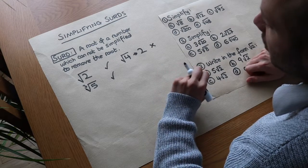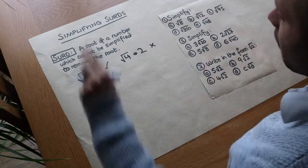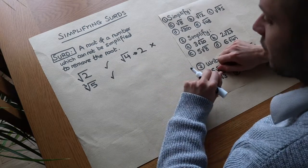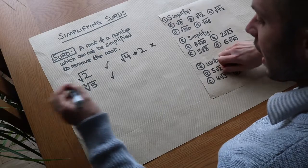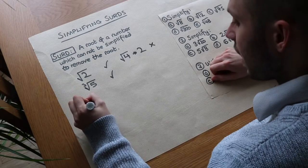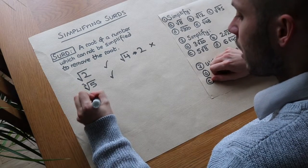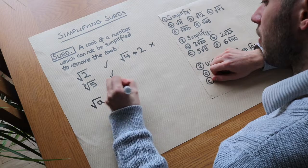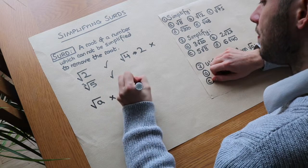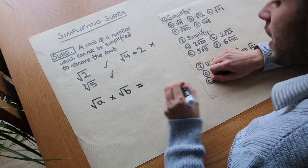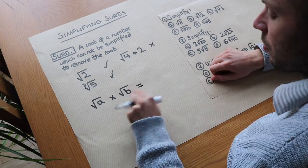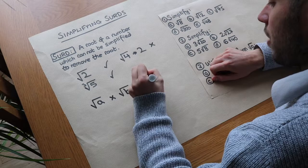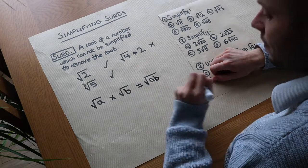Now there are just two laws of surds that you need to know, which covers the whole of this topic across multiple videos. If you have the square root of a number times the square root of another number, then you can multiply the a and the b together — so it'd be the square root of ab.